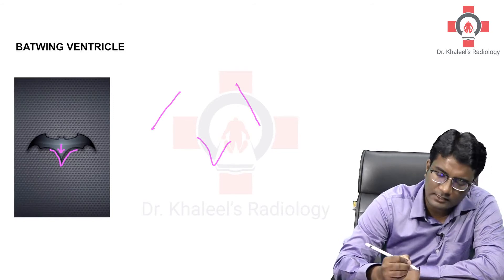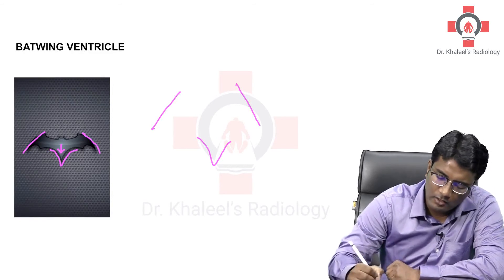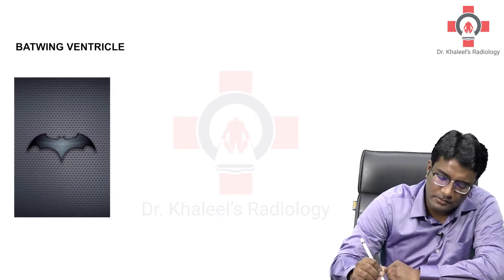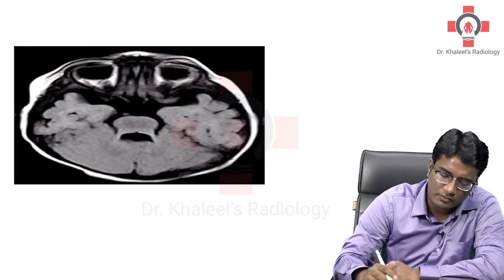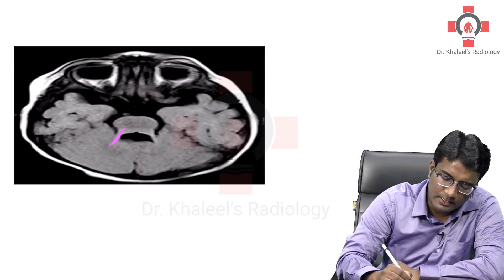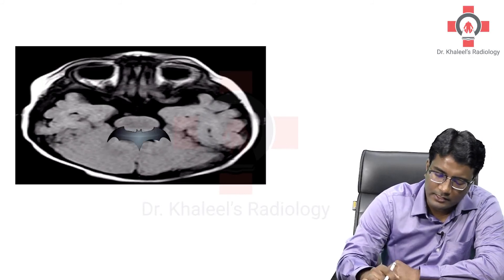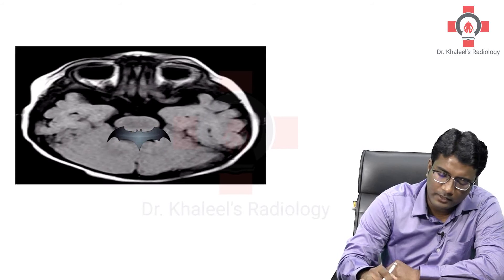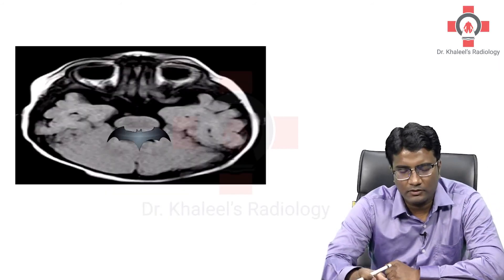So, you see the CSF signal in the fourth ventricle protruding backwards. The cerebellar peduncles are also elongated. All of this will give the appearance of a batwing. In case of Joubert syndrome, you also see the shape of the fourth ventricle. Because of the elongated cerebellar peduncles, the shape of the fourth ventricle assumes the shape of a batwing. So, batwing ventricle is also a feature of Joubert syndrome.